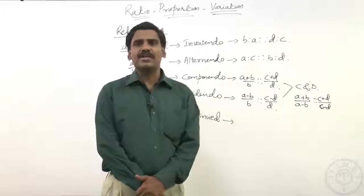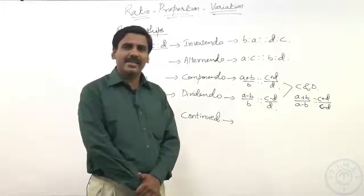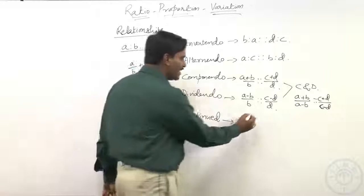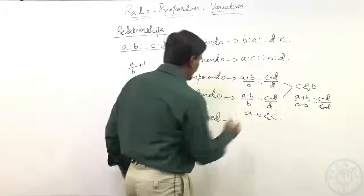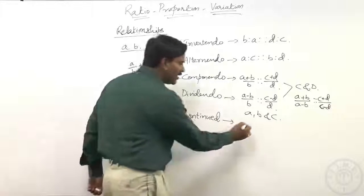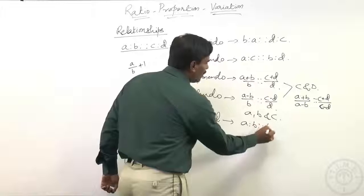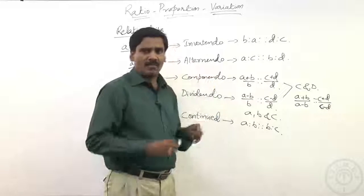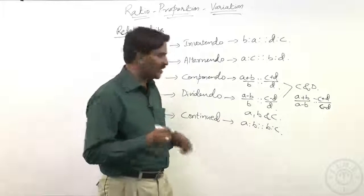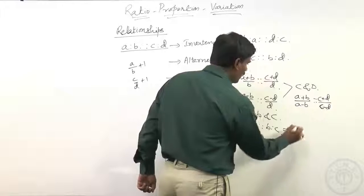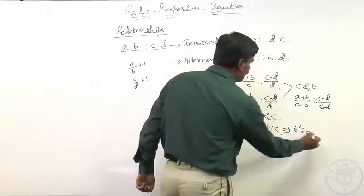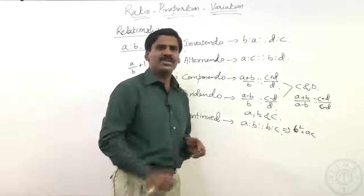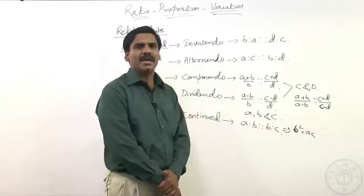Let us focus on the last one — continued proportion. Continued proportion is basically used for three terms. If we have three terms a, b, and c, then we say that they are in continued proportion if a is to b is in proportion with b is to c.